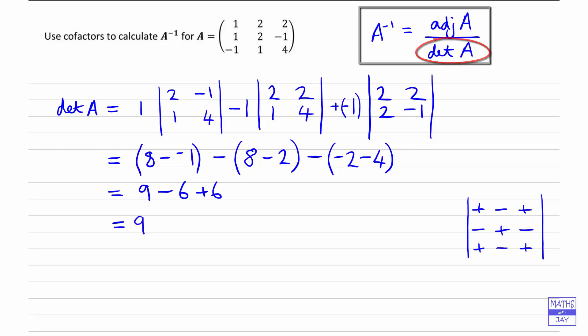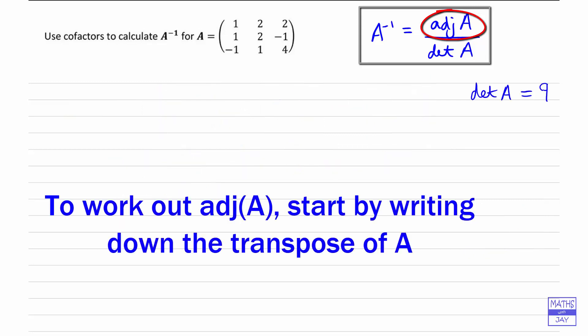So we can now go on and work out the adjugate of matrix A. So let's clear this away. So working out the adjugate means that we have two stages. For the next stage, we want to work out the transpose of A first of all. So that means we're swapping the rows and columns.